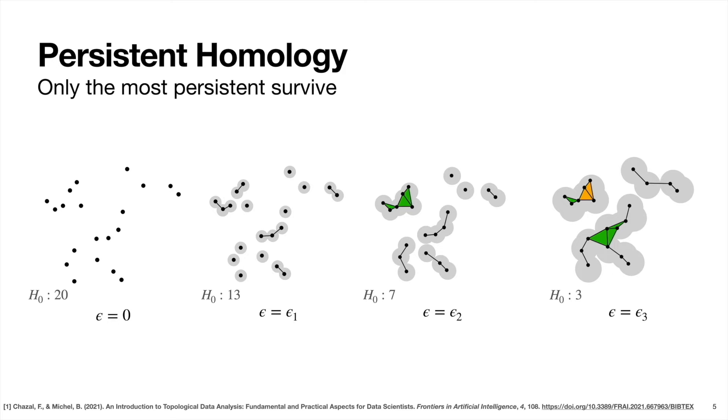So this gives us a way to suss out which topological features of our data are significant based on how long they persist during this circle growing process. In other words, the holes that persist over a large increase in radii are more significant than the ones that persist over just a short period. Okay, so how can we track the persistence of these holes?